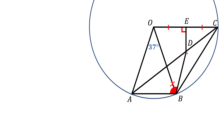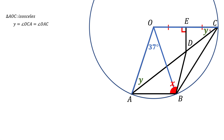First, notice that we have a circle, and radii from the center create isosceles triangles. In our case, AO, BO, and CO are all congruent — the same length. Now let's look at triangle AOC. That's an isosceles triangle, so the angles at the base should be the same. Let's call them Y — Y here and Y here.